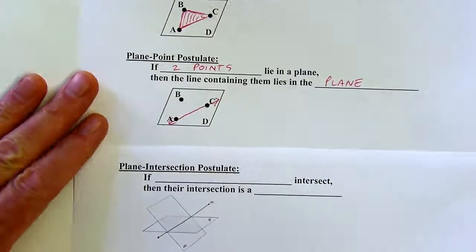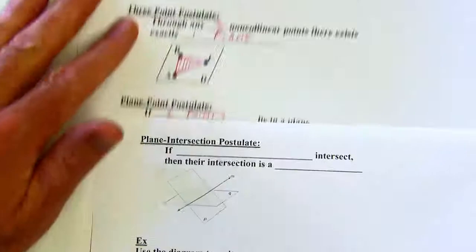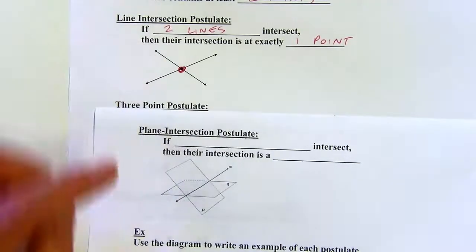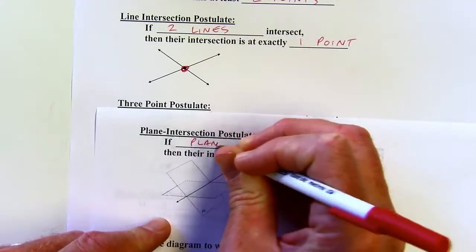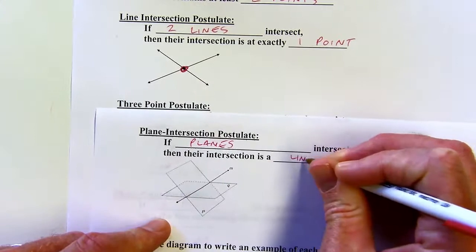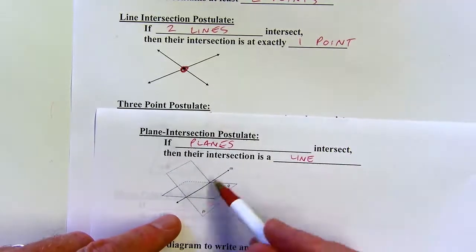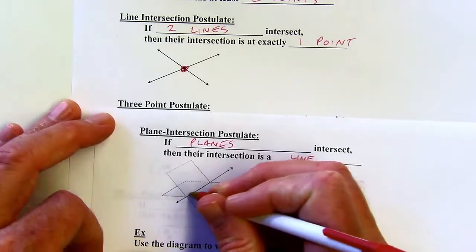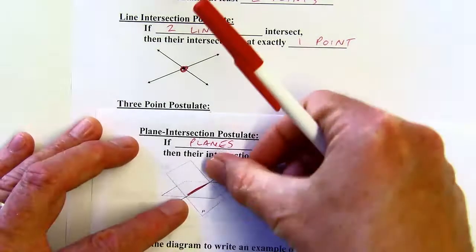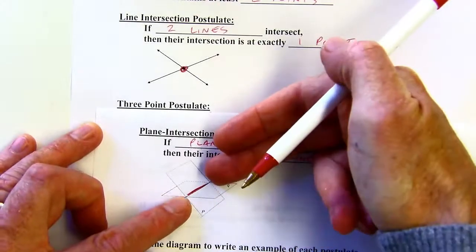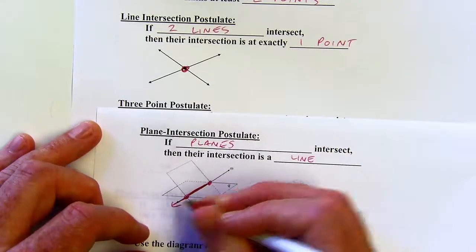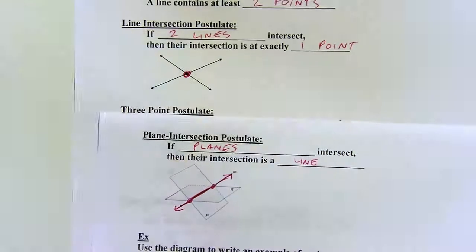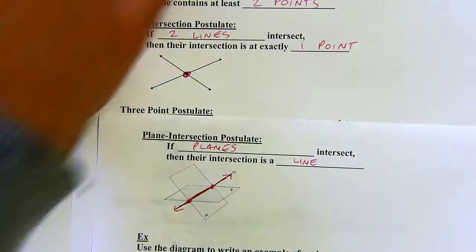The last postulate is the plane-intersection postulate. If two lines intersect at a point, then two planes intersect at a line. It's like the spine of a book — the spine would be the line. A common mistake is thinking it's a line segment because the parallelograms representing the planes look finite. But those planes go on forever, so their intersection goes on forever, forming a line. Two lines intersect at a point; two planes intersect at a line.